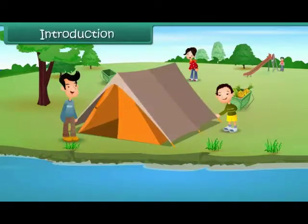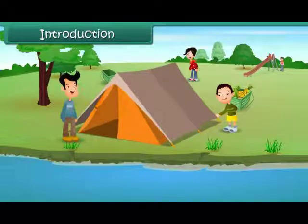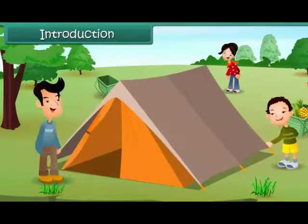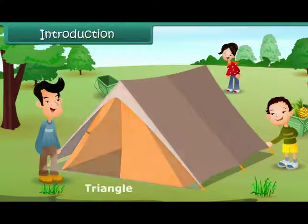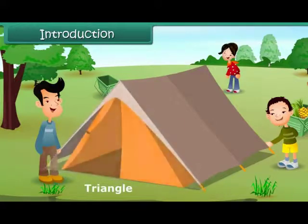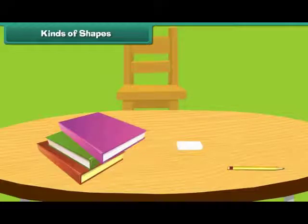Introduction. Vasu has gone camping with his family. He's helping his father pitch tents in an open area near the river. While doing so, he realizes that the tent looks like a triangle. In this lesson, you will learn about plane and solid shapes, kinds of shapes.